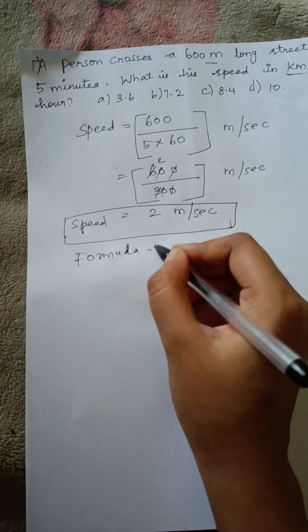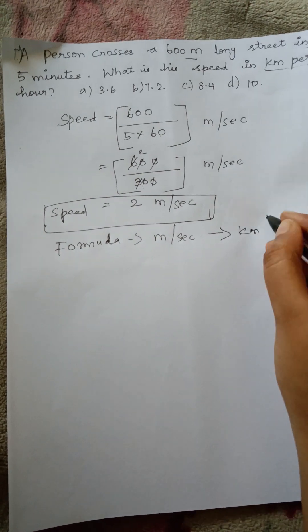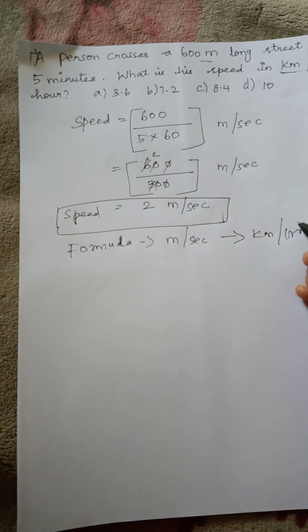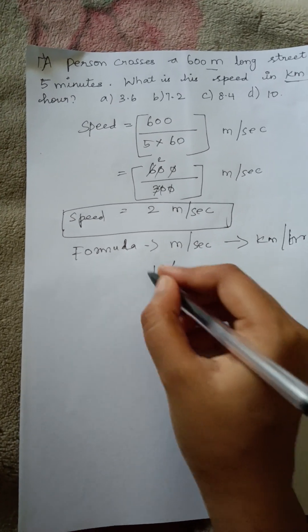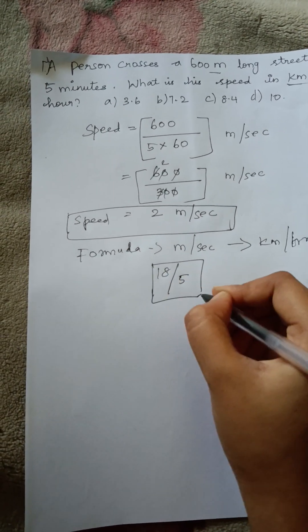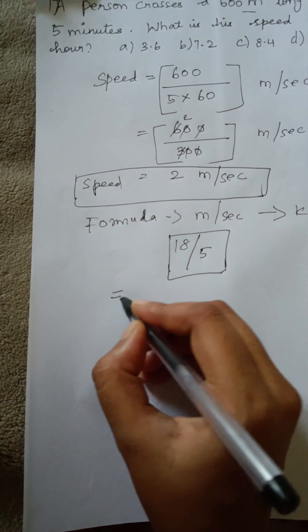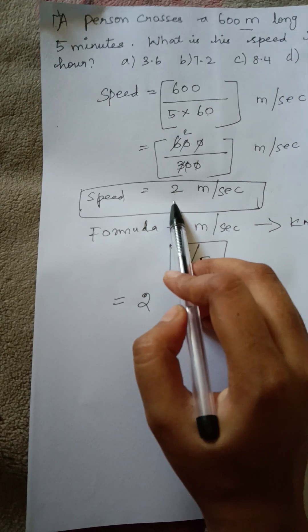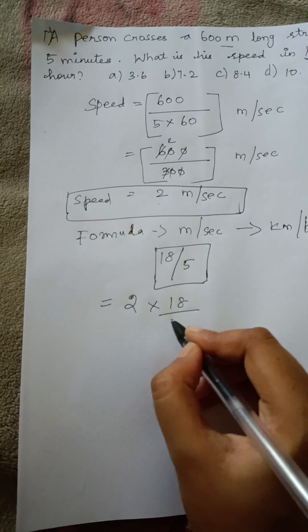Formula for converting meter per second to kilometer per hour: the formula is 18 divided by 5. Know this formula, this is an important formula. Now 2 meter per second, to find the answer: 2 into 18 divided by 5.